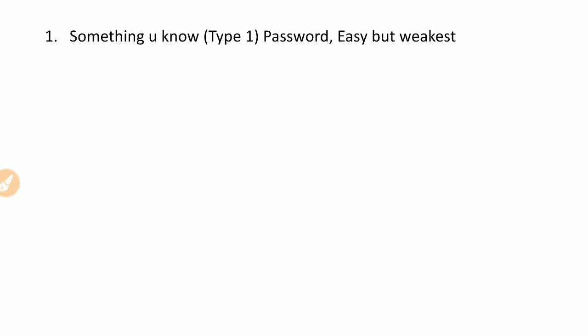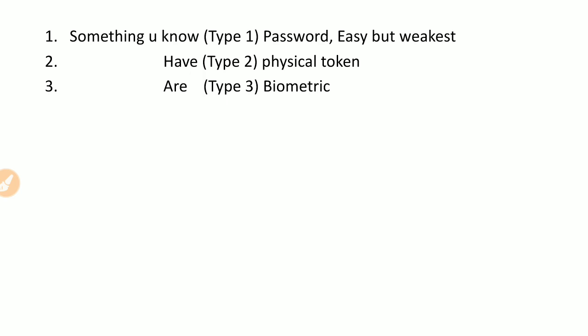The first type of authentication method is something you know, also called Type 1 authentication. For example, a password you know — it is the easiest but weakest to implement. The second type is something you are in possession of, for example a physical token or smart card. The third type is something you are — your physical characteristic or biometrics. The fourth type is based on some place from where you are accessing the system, for example your IP address or GPS location. There are also other types, such as something you do — how you type on the keyboard or how you sign your name.